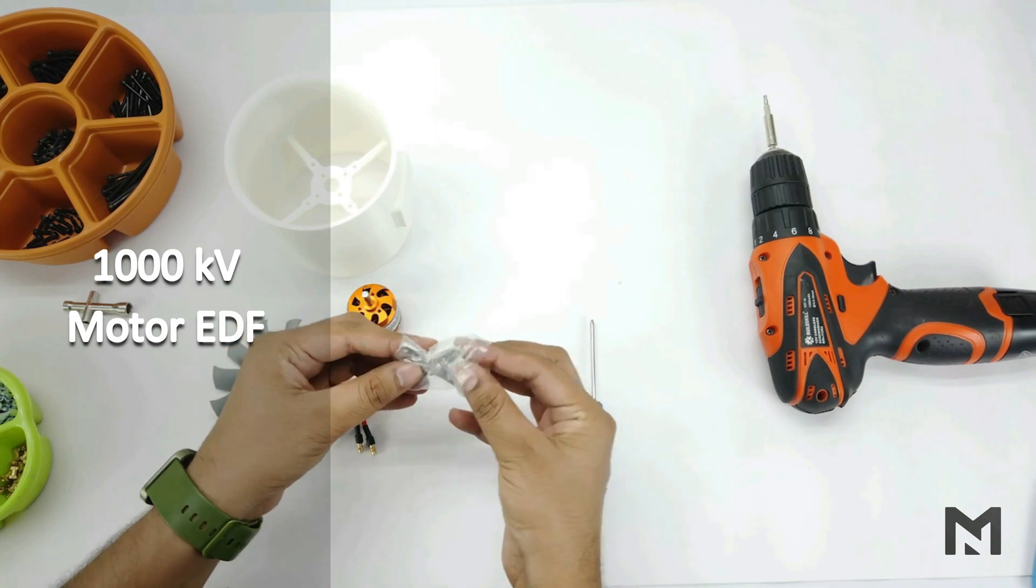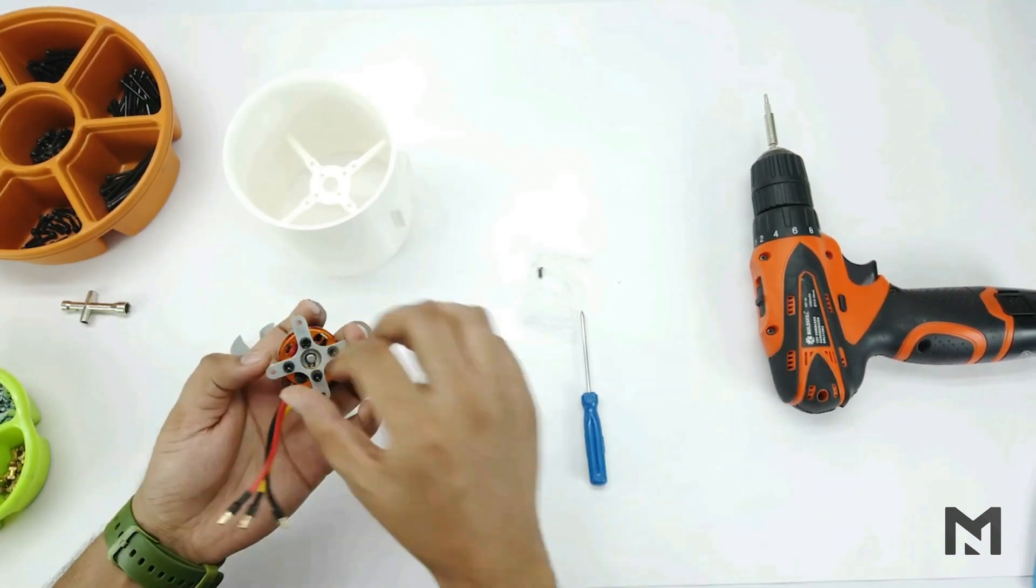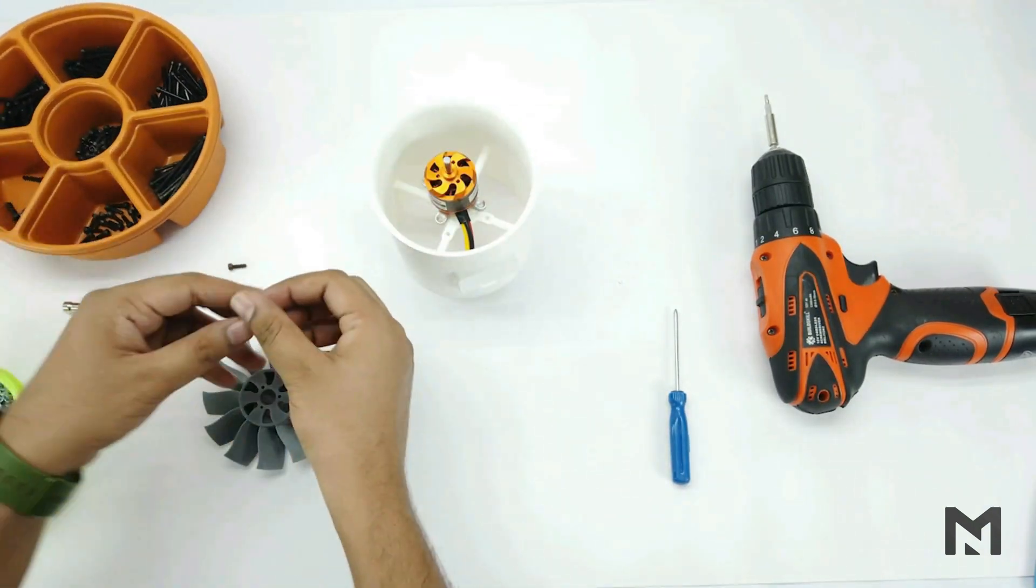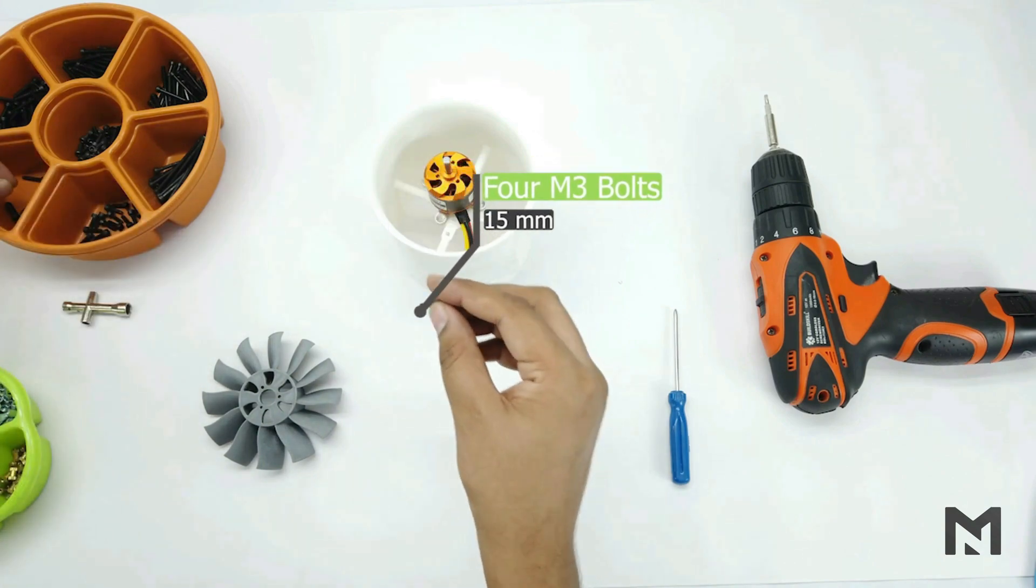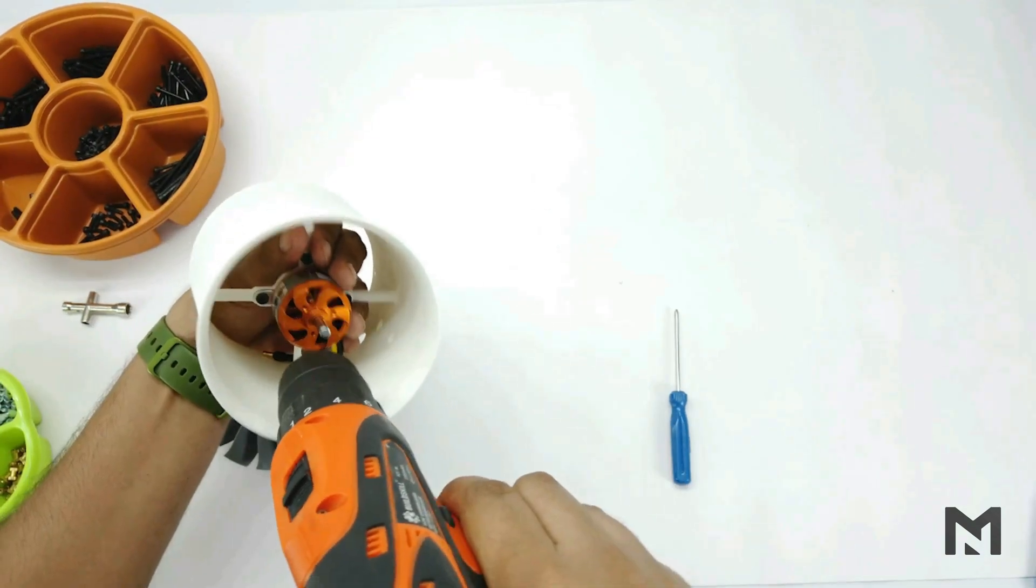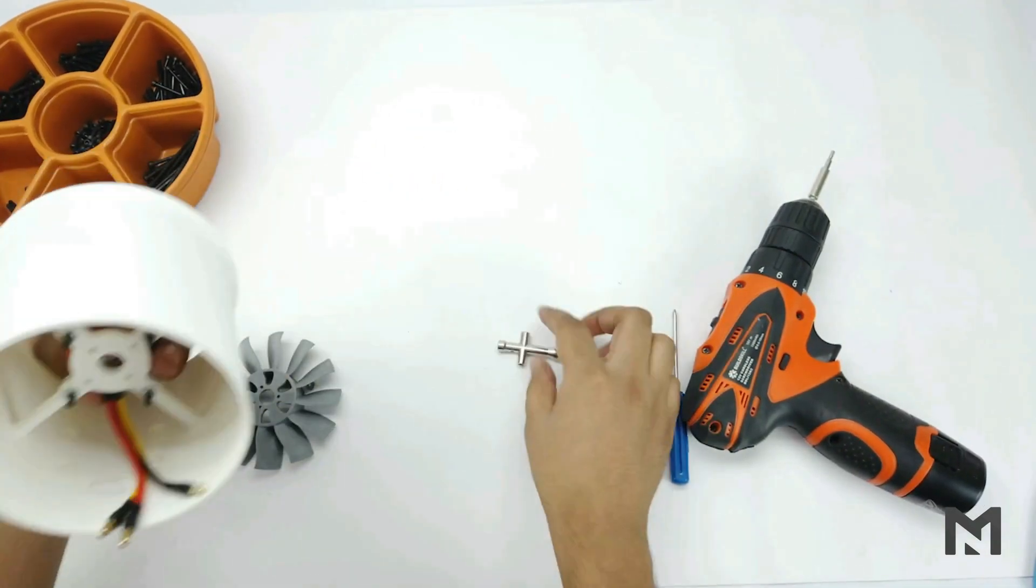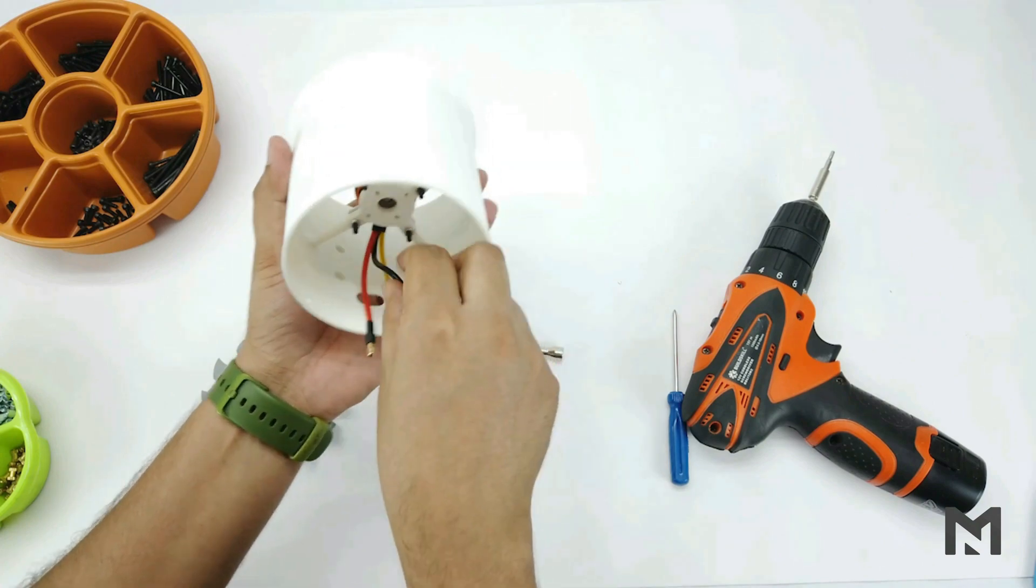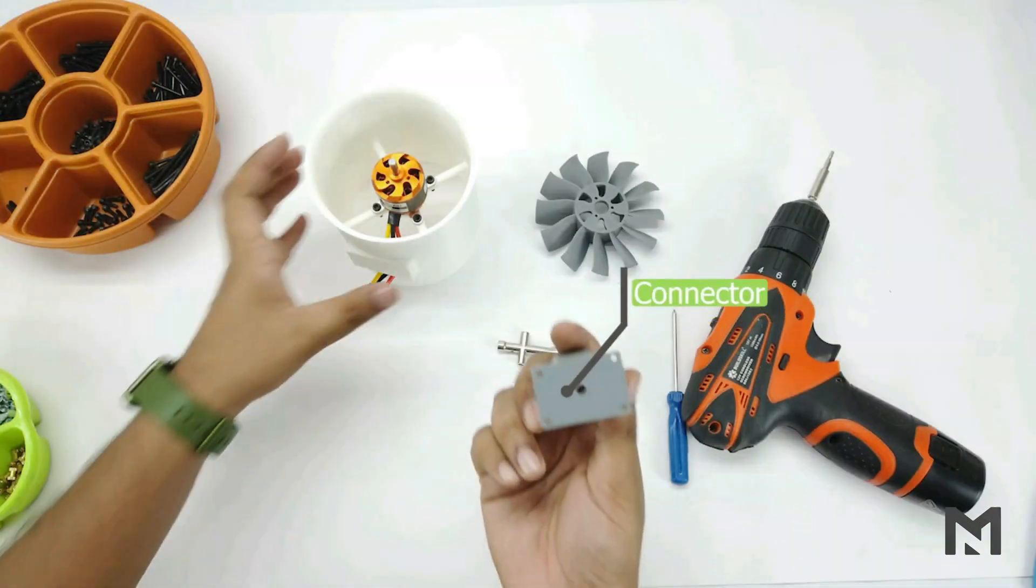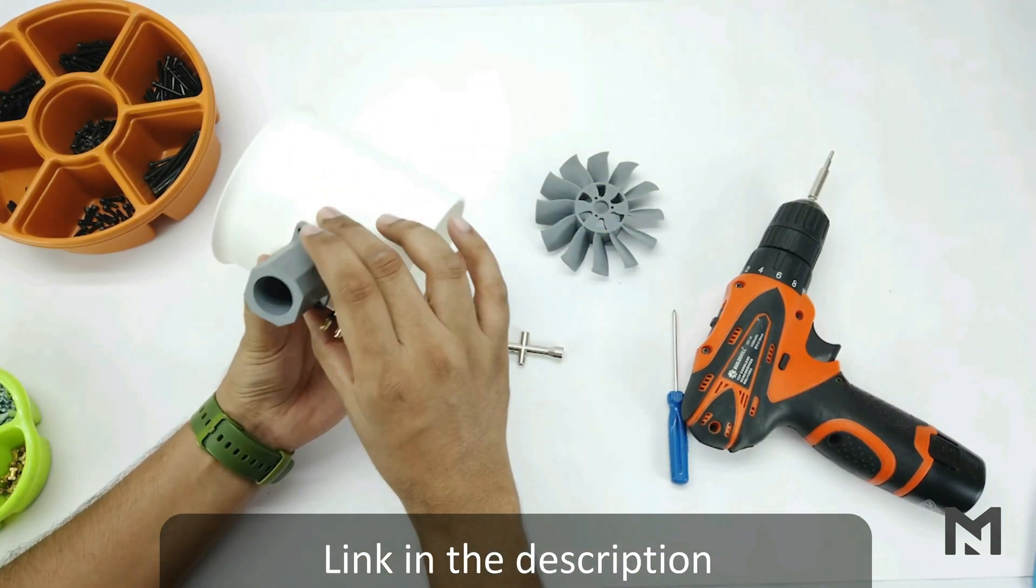So first we will connect the aluminum plate with the motor. I will be using 15mm M3 screws to attach the motor. Pass the wire through the hole. Now I will connect this connector with the EDF. The part file of this connector is provided in the description.